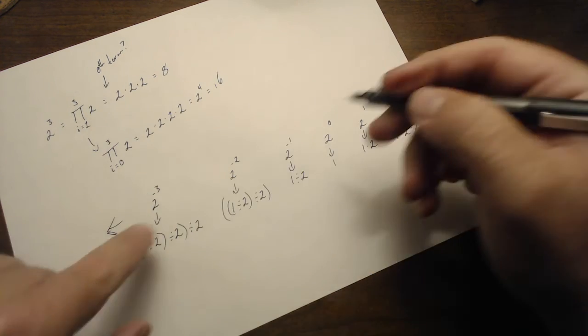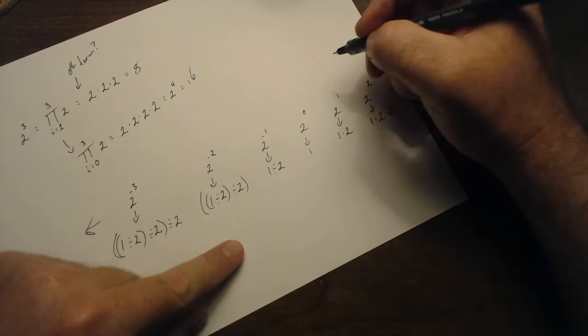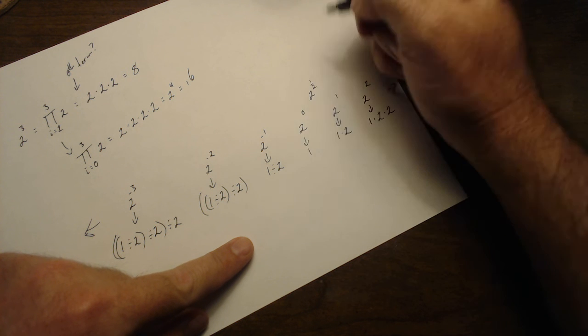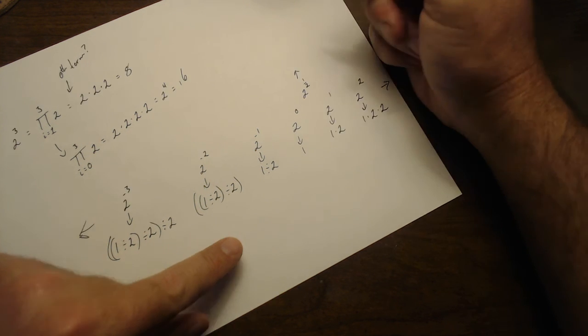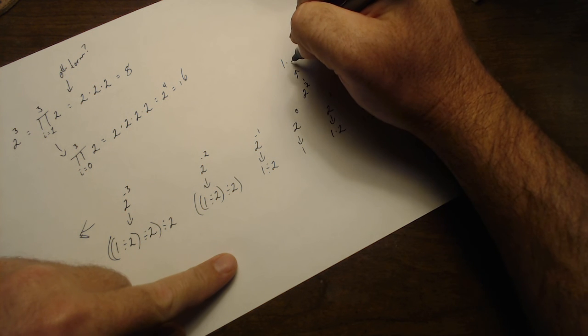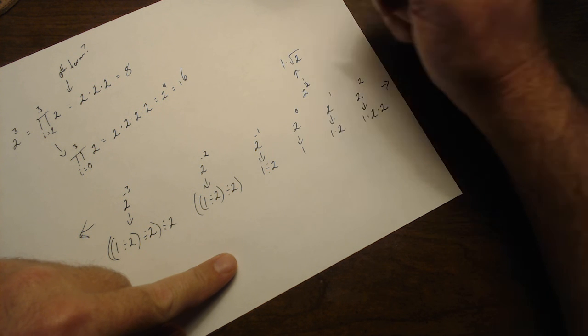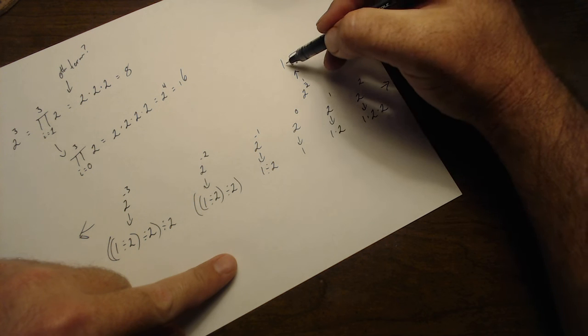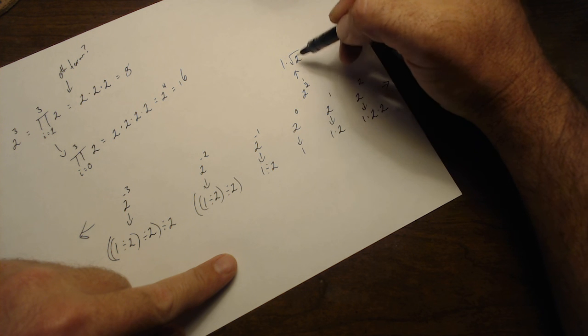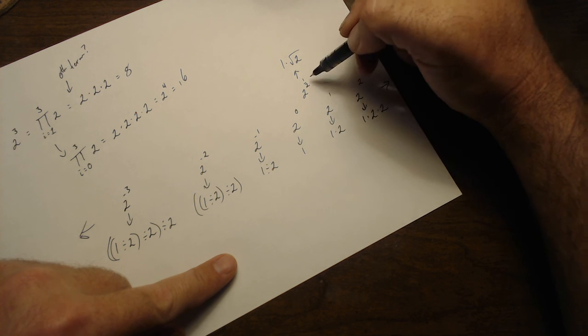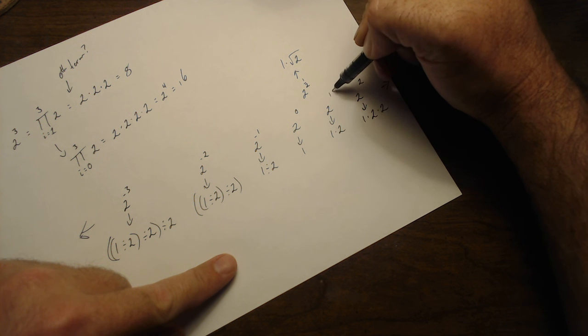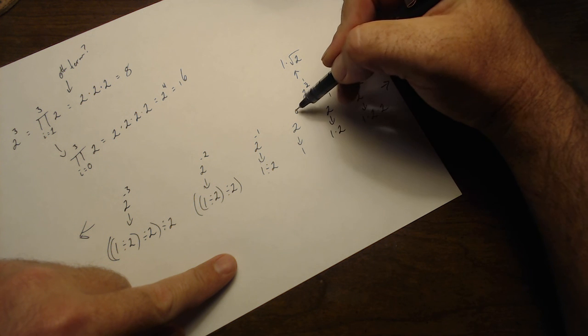And we can also do fractional things, right? Like 2 to the 1 half is, oh that is a loud quail, 2 times the square root of 2. And if we were to have 2 of those, which is what this 2 is indicating here, if we were to do that twice we would get here. This 1 half is 1 half of this, halfway between here and here.